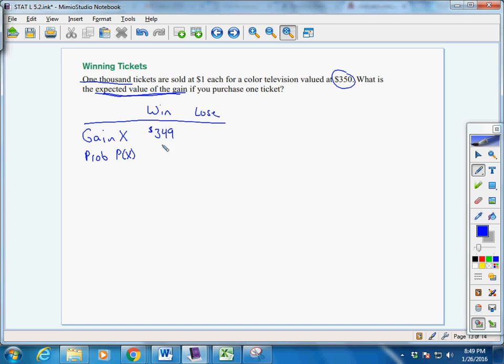What's the probability of that happening? Well, they sold 1,000 tickets. So you buy one of them, you have 1 out of 1,000 chance of winning.